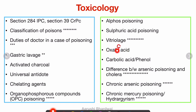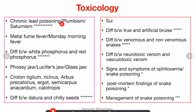Oxalic acid and carbolic acid, also known as phenol — these are good read-through topics. The difference between arsenic poisoning and cholera is a very important topic, as indicated by the number of stars given. It comes under acute arsenic poisoning, and chronic arsenic poisoning can be another short note.